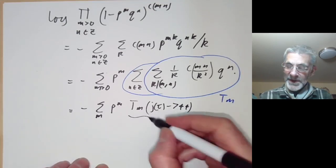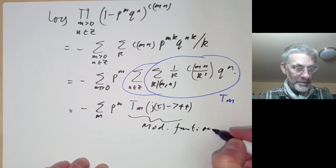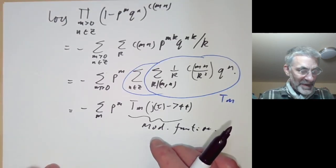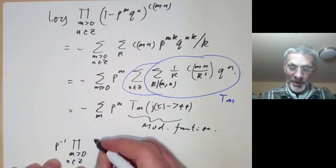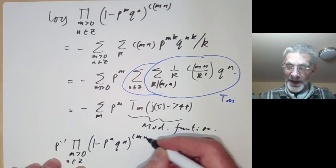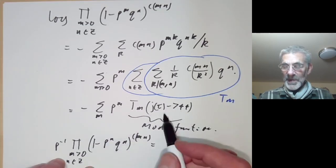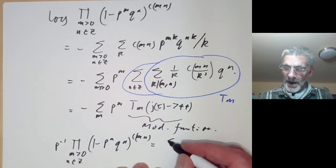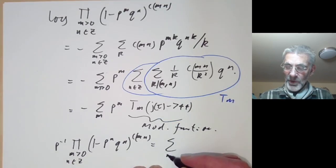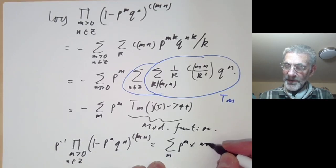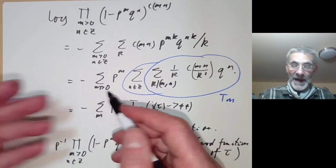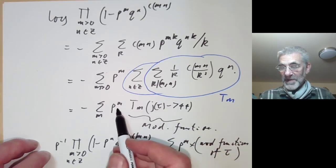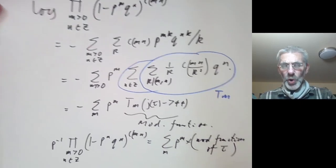All we really care about is that this is some sort of modular function. So if we exponentiate, we find p^{-1} times the product over m > 0, n ∈ ℤ of (1 - p^m q^n)^{c(mn)}. It's going to be the exponential of this — obviously some horrible mess — but we don't really care. All we need to say is it's ∑_m p^m times a modular function of τ, because exponentiating a sum of p^m times modular functions still gives coefficients of powers of p that are modular functions.